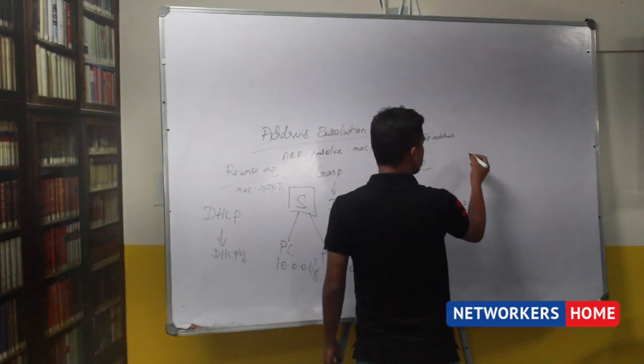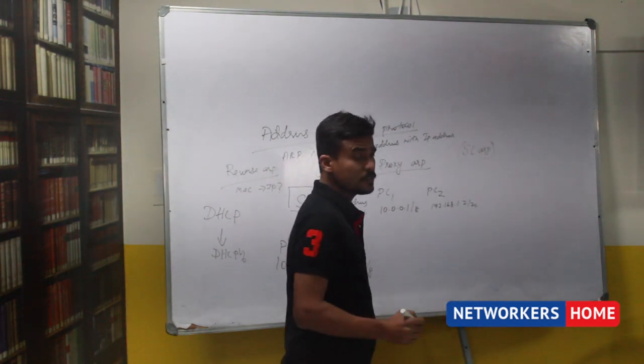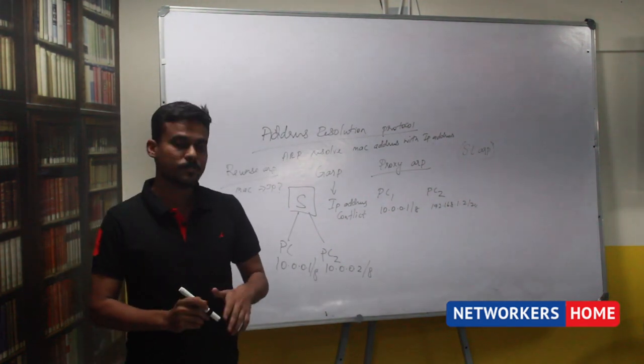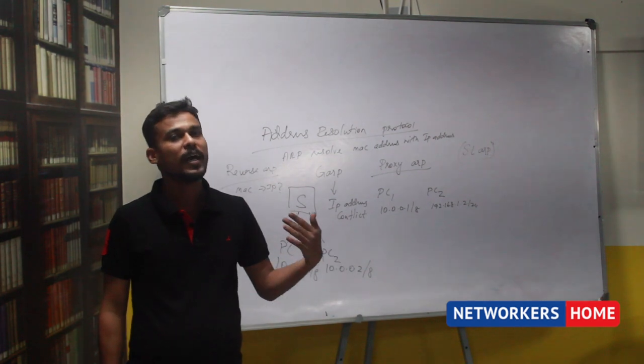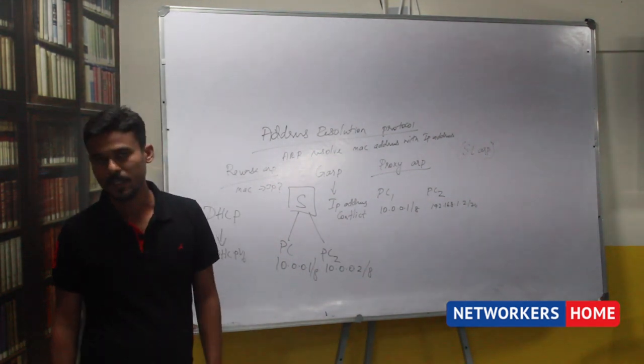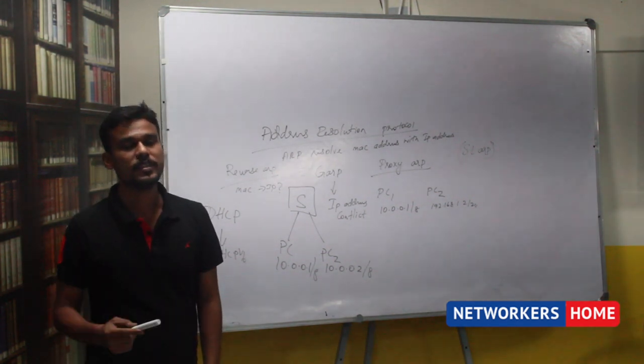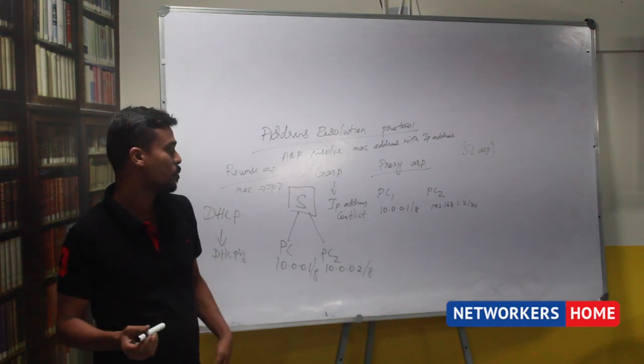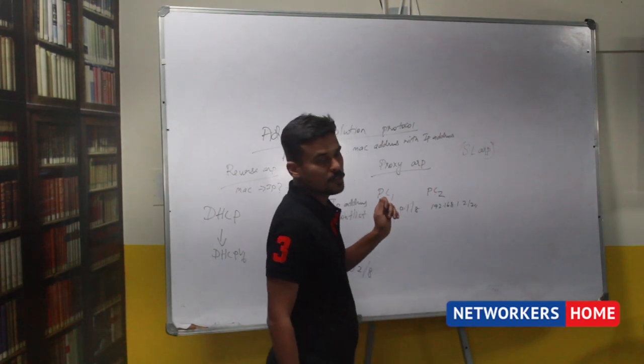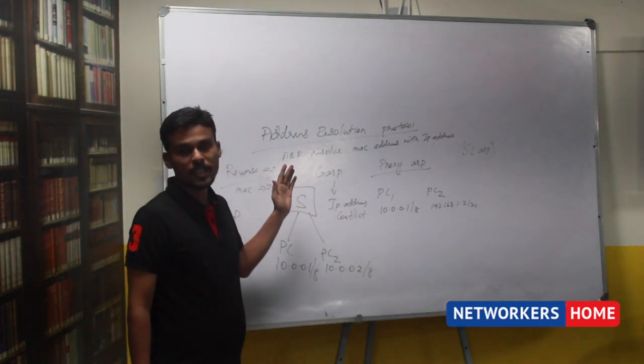We have one more protocol called Serial Line ARP. In case you are having serial link between the routers and server is in one network, client is in another network. Through DHCP relay, they will be getting the IP. If the link is a serial link, it will send the IP address by means of a protocol called Serial Line ARP. It will carry those informations. These are the types of ARP we are having in layer 2.